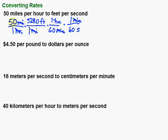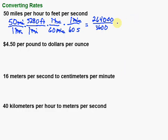So now I go ahead and multiply across on the top and the bottom. 50 times 5,280 gives us 264,000 on top. On the bottom, 60 times 60 is 3,600. Then doing that division, I get 73.3333 repeating, which is the same as 73 and one third. Depending on what you're working with, you may want the fraction or you may want to round. The label we ended up with is feet per second — just what we were looking for.